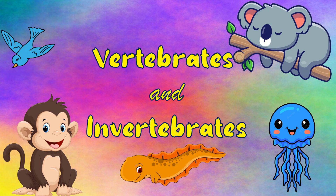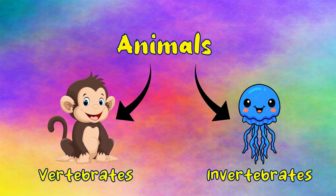Vertebrates and invertebrates. How are animals classified? Scientists have grouped animals into classes to make it easier to study them. The animal kingdom is divided into two groups based on the presence or absence of a backbone. The backbone is the observable feature that defines whether the animal is a vertebrate or an invertebrate. Animals that have a backbone are called vertebrates, and animals that don't have a backbone are called invertebrates.